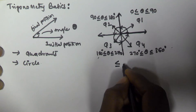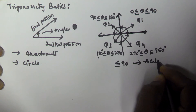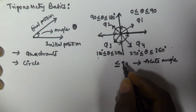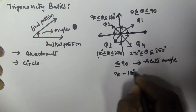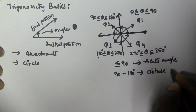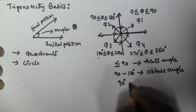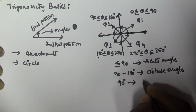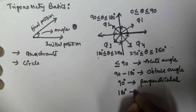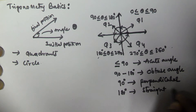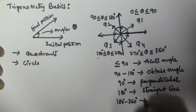If the given angle is less than or equal to 90 degrees, it is called an acute angle. If it is between 90 to 180 degrees, it is called an obtuse angle. If it is exactly 90 degrees, it is called perpendicular. If it is exactly 180 degrees, it is called a straight line. If it is between 180 to 360, it is called a reflex angle.